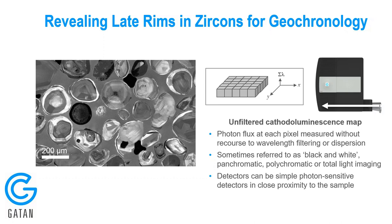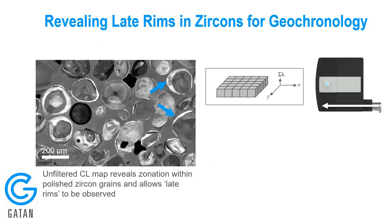Perhaps the simplest way to analyze the light is measuring how much comes out at each pixel — an analysis method termed unfiltered cathodoluminescence mapping or imaging. In this case we measure the intensity or photon flux at each pixel without wavelength filtering or dispersion. This is also called panchromatic, polychromatic, or total light imaging. These unfiltered maps have a very important use in geosciences: they allow us to reveal what are called late rims in zircons, which are particularly important because these minerals are used for geochronology studies — dating rocks.